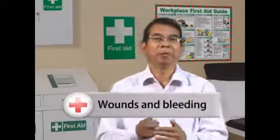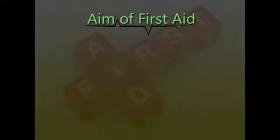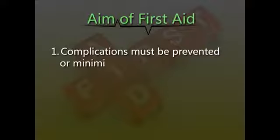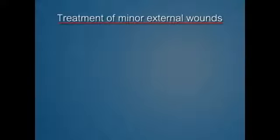Injuries which result in wounds and bleeding: if the wound is minor, the aim of first aid is to prevent infection. However, severe wounds may be very daunting to deal with, but the aim is to prevent further blood loss and minimize the shock that could result from bleeding. The aim of first aid is: number one, complications must be prevented or minimized; number two, the location and extent of a wound must be carefully assessed.